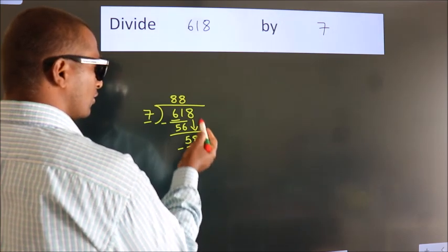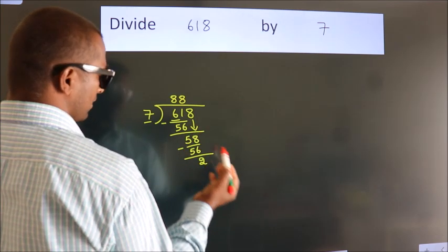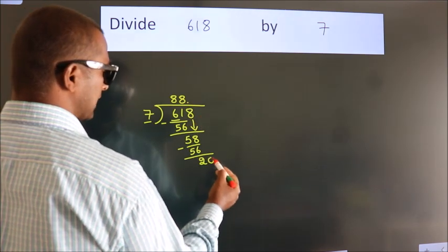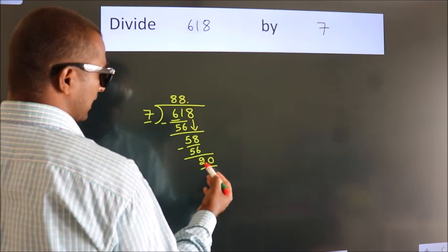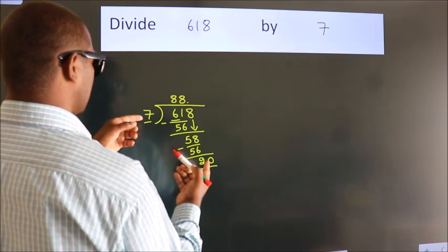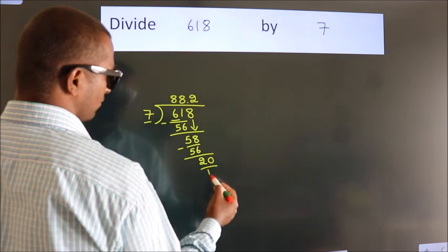After this, no more numbers to bring it down. So what we do is we put dot, take 0. So 20. A number close to 20 in 7 table is 7 times 2, 14.